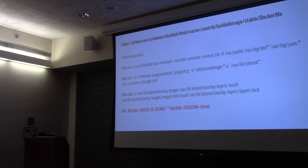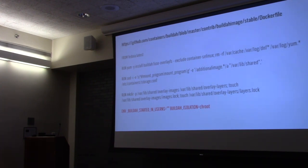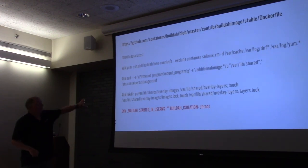The last step inside the Buildah container image that we want to build is setting two environment variables. The first tells Buildah not to run inside a user namespace — we're already in a user namespace and we don't want to go into another one, since that requires privilege. The last thing we tell it is to use isolation based on chroot, because we're in a container and we don't want to set up a secondary container.